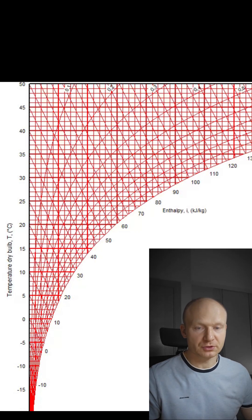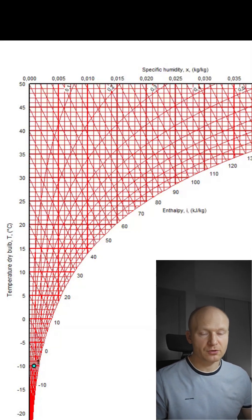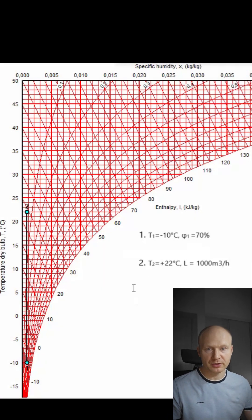Let's say intake air temperature minus 10 degrees Celsius and 70% relative humidity, supply temperature needed plus 22 degrees Celsius. Air flow 1000 cubic meters per hour.